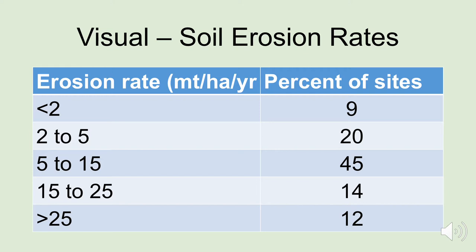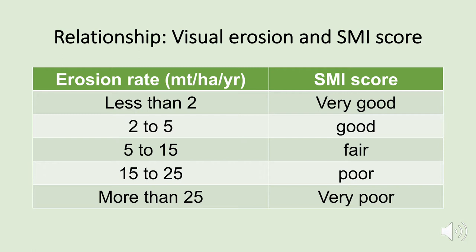We found something very interesting — the SMI scores were very much related to what we thought we saw visually. If we look at the relationship between visual erosion rates and the SMI scores, we got a very good relationship. Where we saw visual erosion rates on the land adjacent to our sampling sites less than 2 metric tons per hectare per year, we had very good SMI scores. Where the erosion rates were very high — more than 25 metric tons per hectare — our SMI scores were very poor.